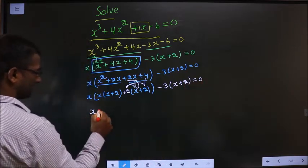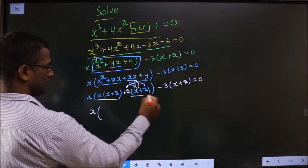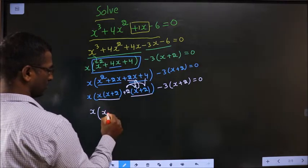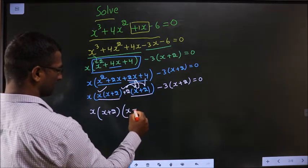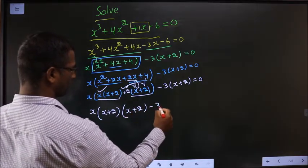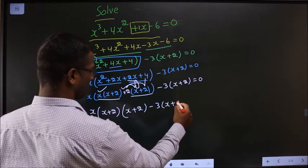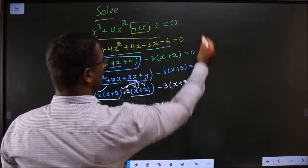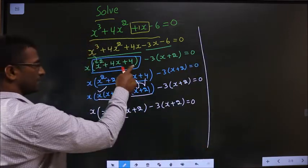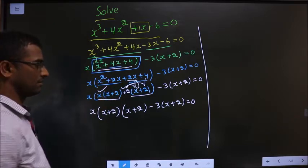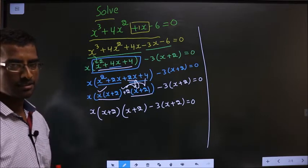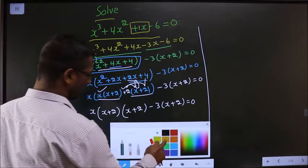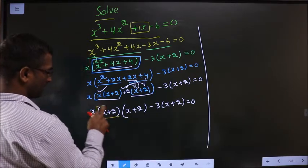Next, from these two take x plus 2 common. So you are left with x and plus 2. This is factorization. Now how do I simplify? Did you get the catch?